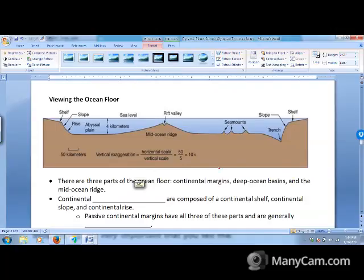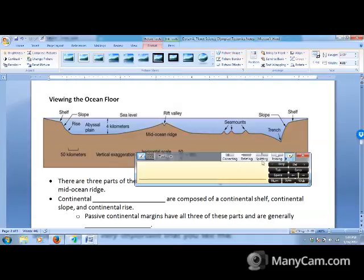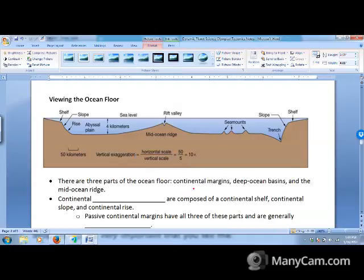Before we get too much into plates, I need to talk about some anatomy of what the ocean floor looks like. So there are three parts of the ocean floor: continental margins, deep ocean basins, and the mid-ocean ridge. I believe I had you memorize some of this at one point, but I want to go a little more into detail.